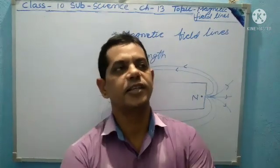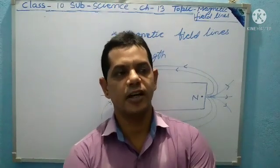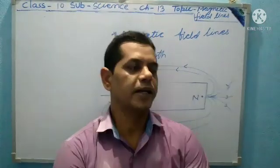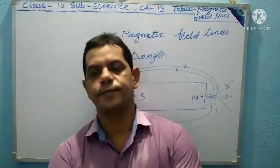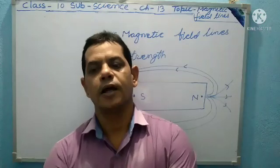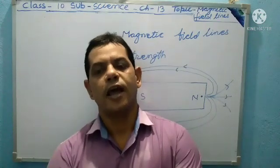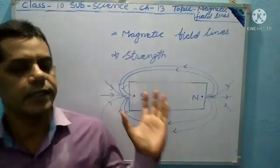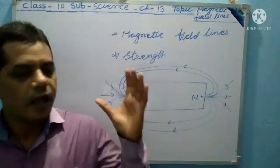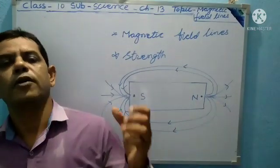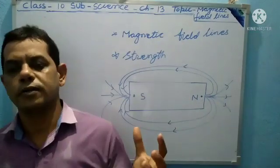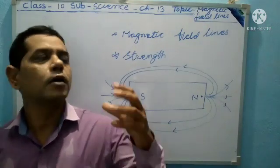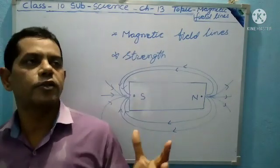Magnetic Field Lines. In previous class, I also discussed the topic of Magnetic Field. Now, Magnetic Field Lines are imaginary — that is, imaginary lines along which a North magnetic pole would move to South.